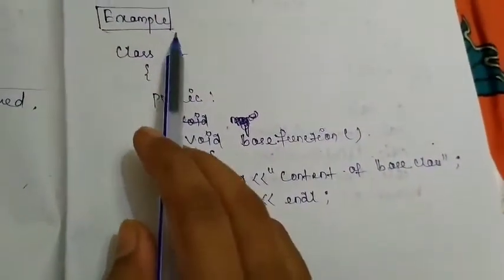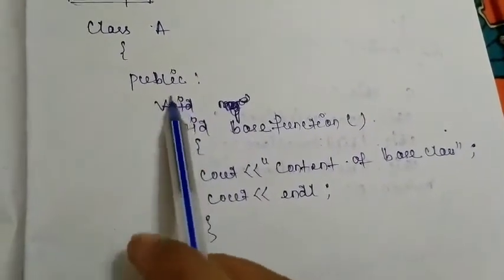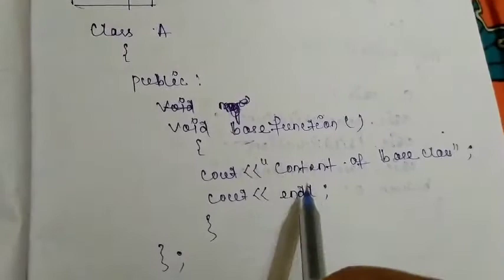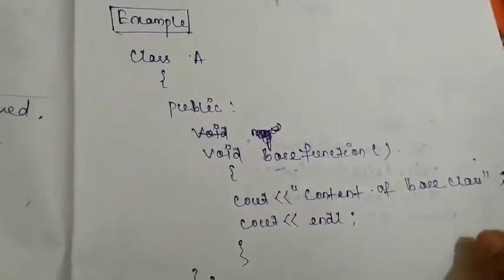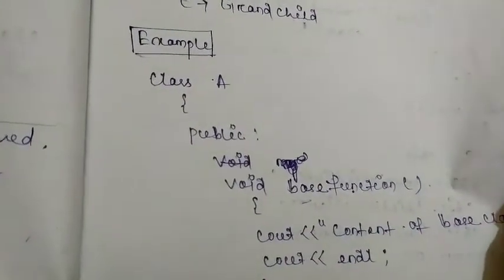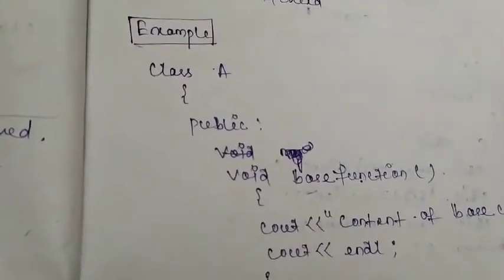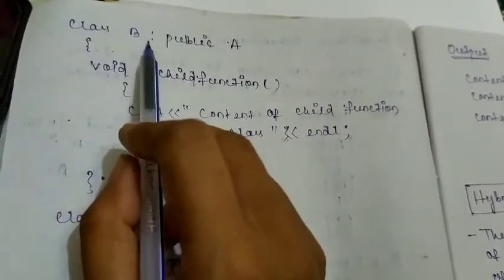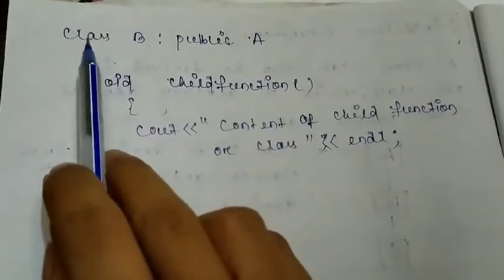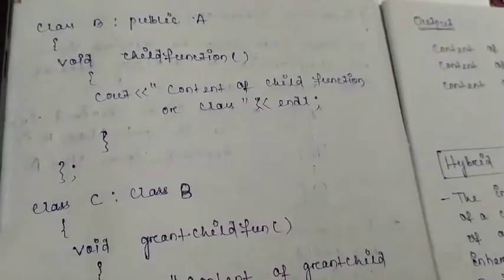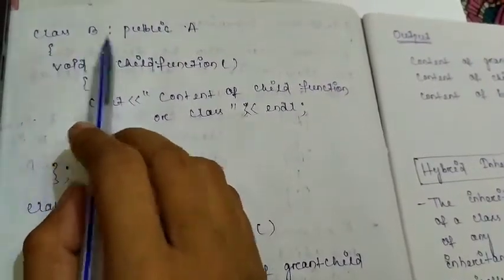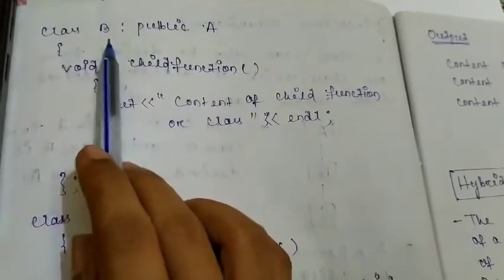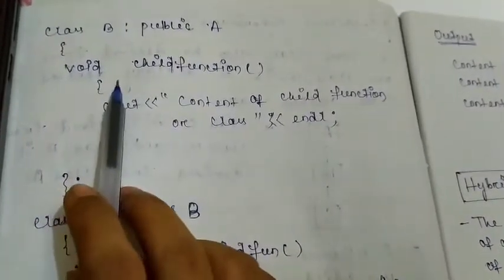Here I am implementing that picture. I have declared class A as public — this is your base function, the function name I have taken as 'base function'. This is the content of the base class. Then class B — the B function is inherited from A — so as the single inheritance syntax, we are writing class B with the access specifier and then the derived class.